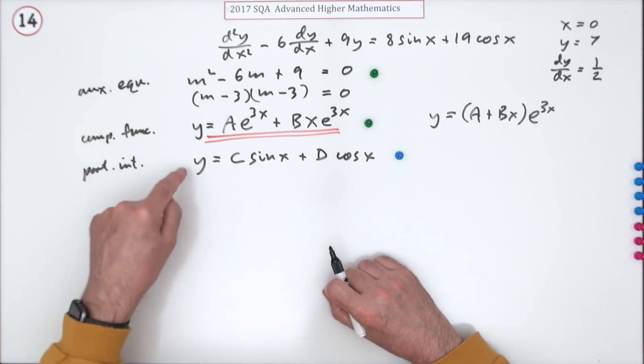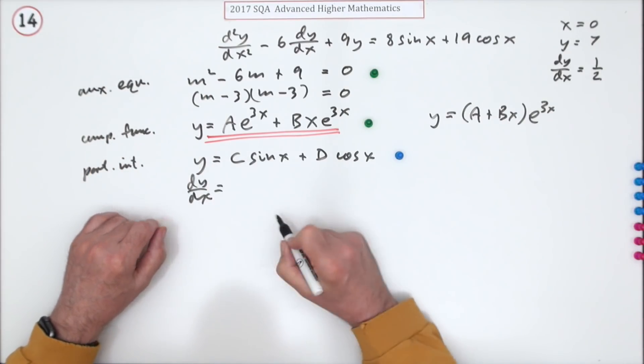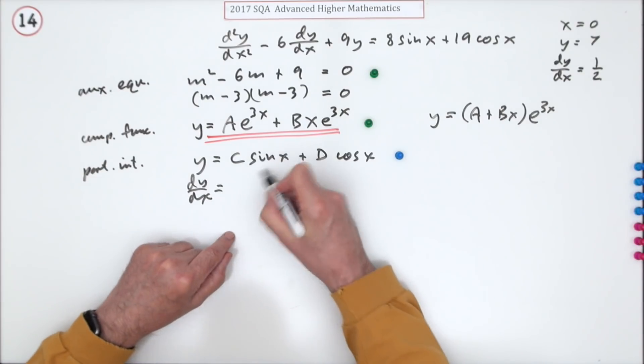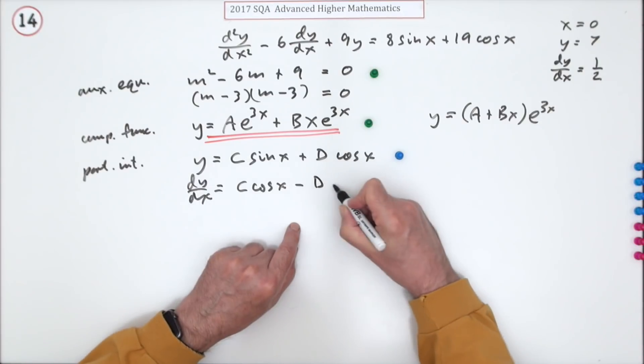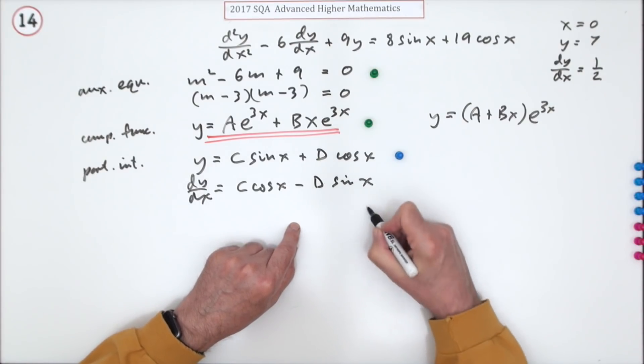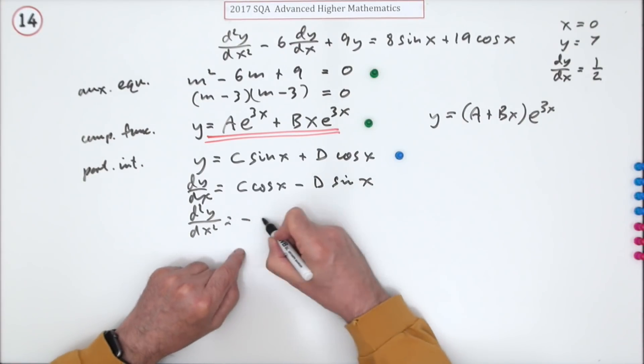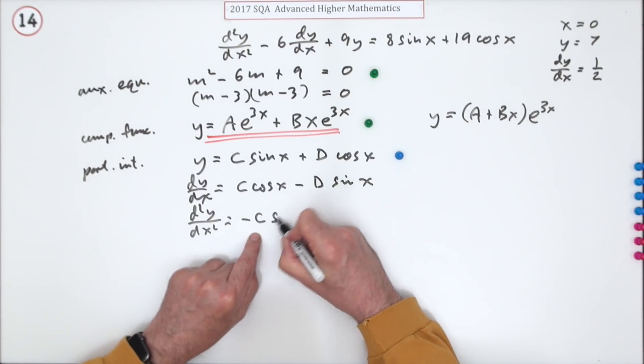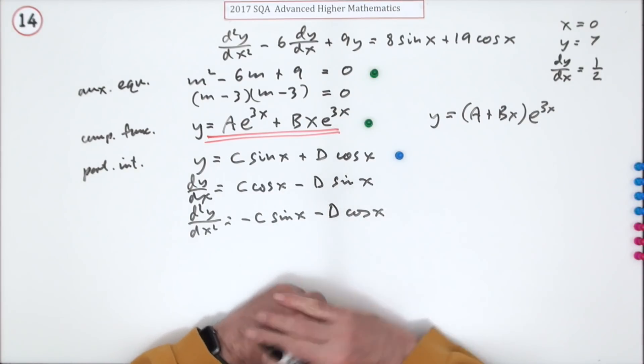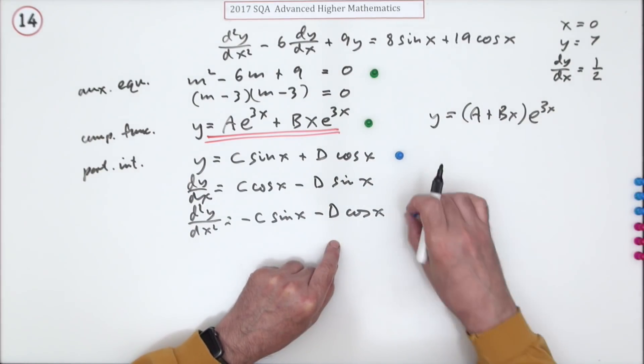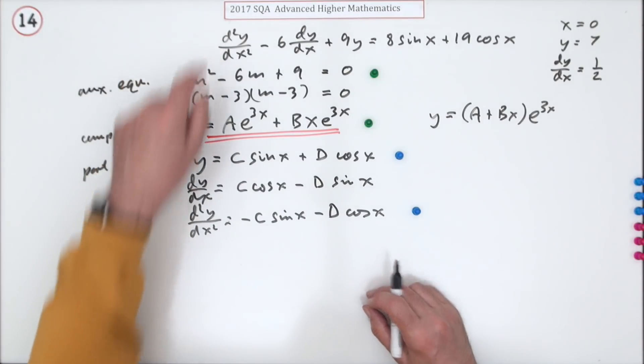I'll need to feed this into the equation, which means I need the two derivatives. So differentiating this, sin goes to cos, that's C cos x. Cos goes to negative sin, so negative D sin x. Differentiate it again, now I've got a negative here as well: negative C sin x minus D cos x. That gets a mark for going through the various derivatives.